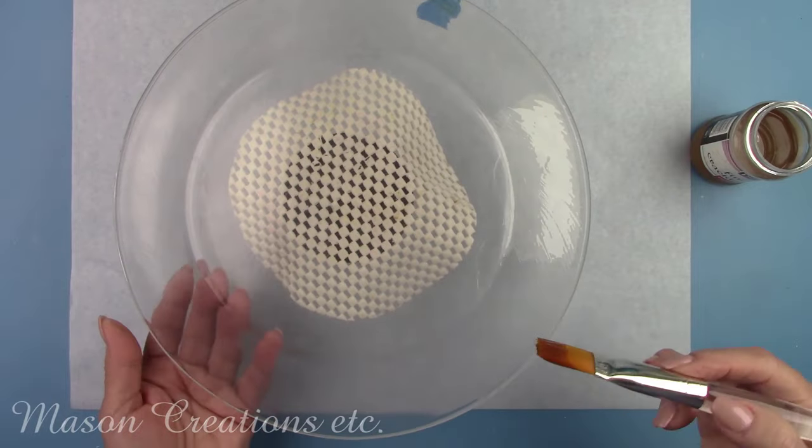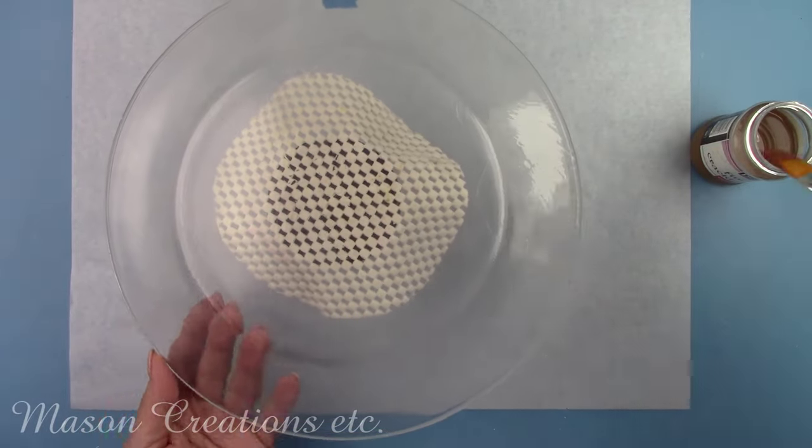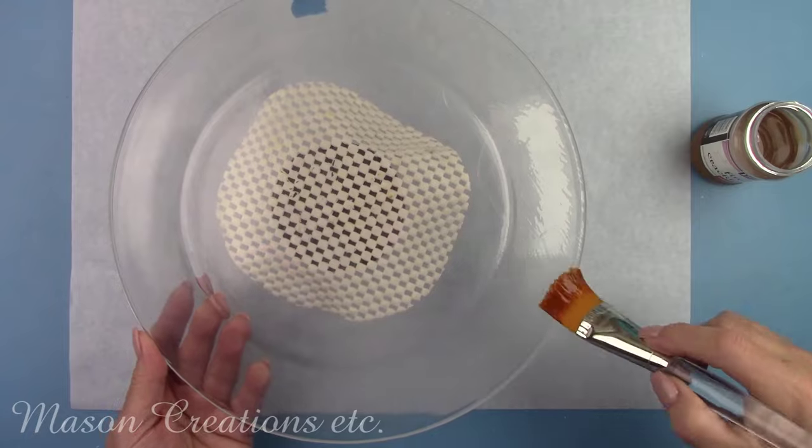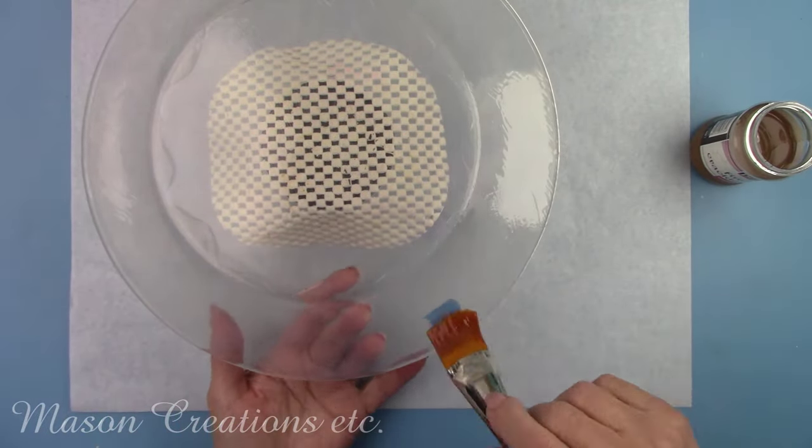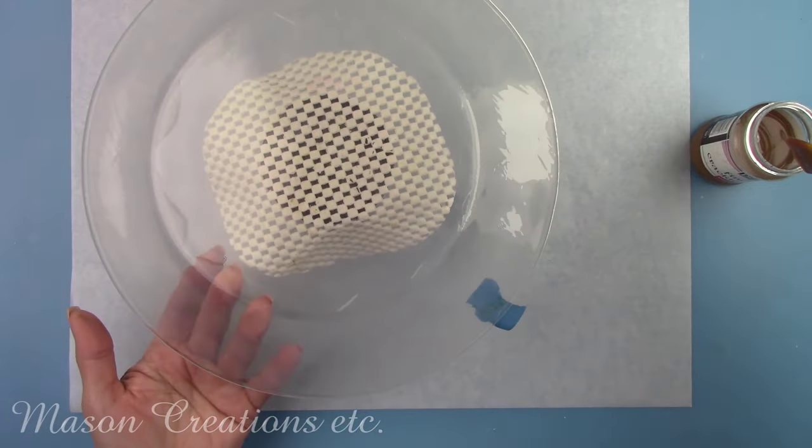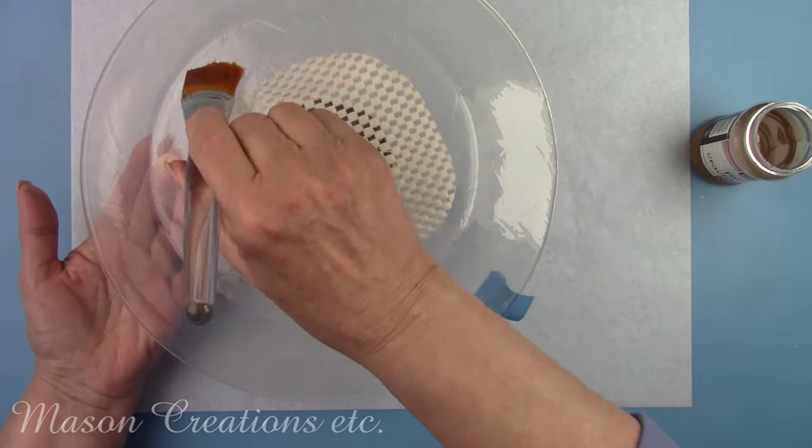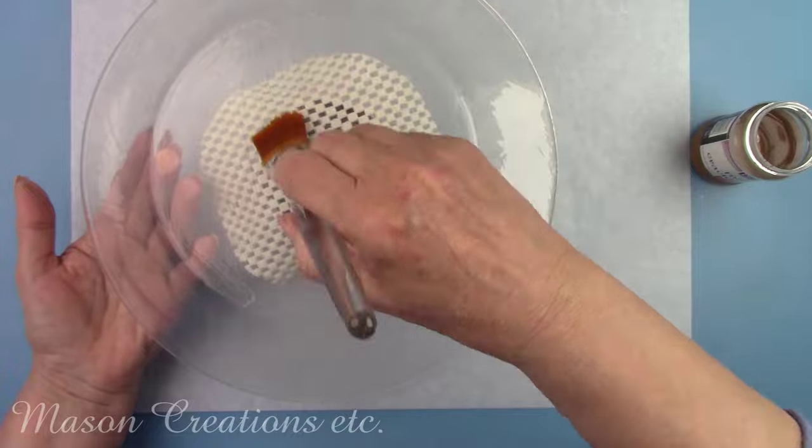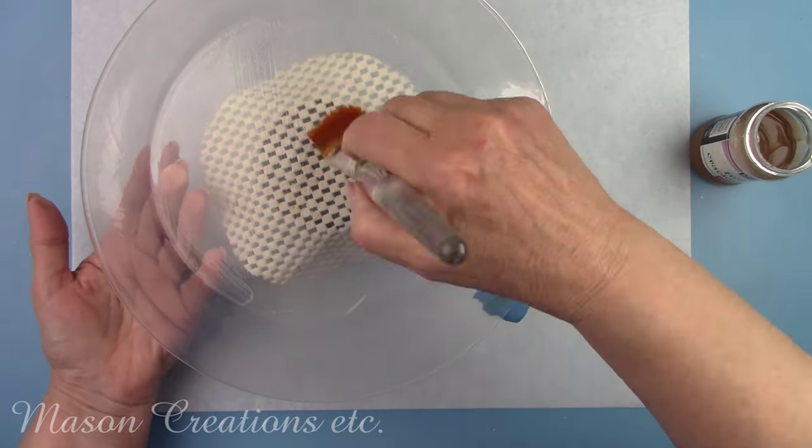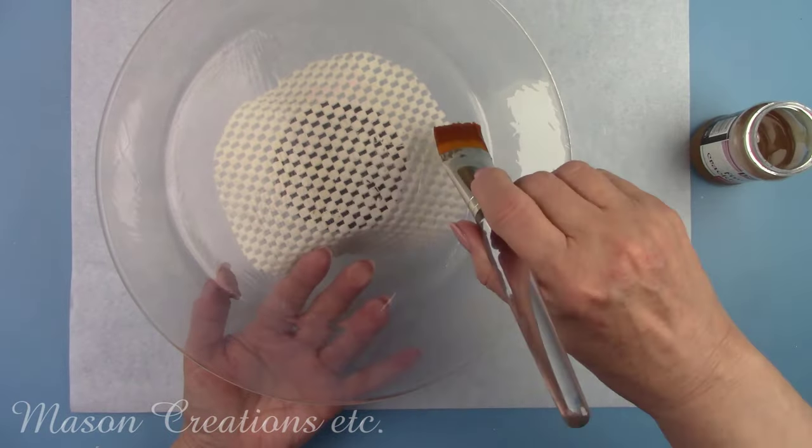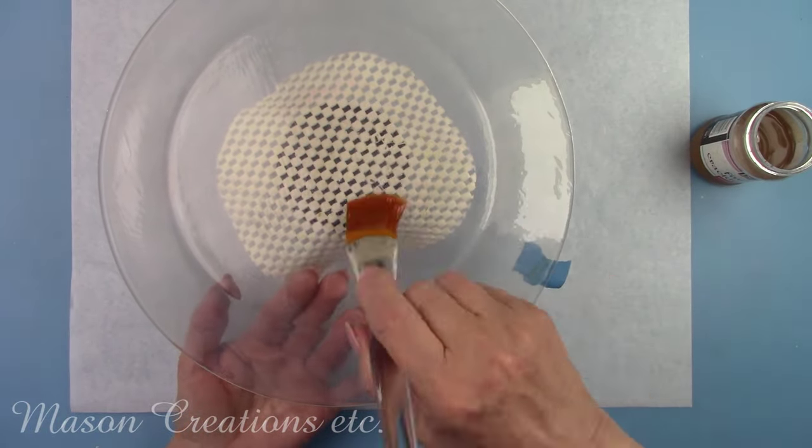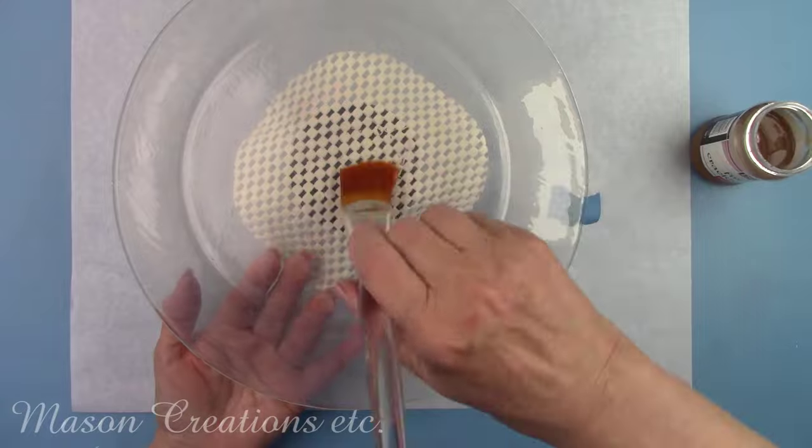After using fine line crackle varnish, you cannot use any water based products. It will ruin your crackle finish. You can only use solvent based antiques and sealers. Normally, we'd be putting on the crackle finish last, but we are doing everything in reverse today. Whatever would be done last will be done first when you do a reverse decoupage.